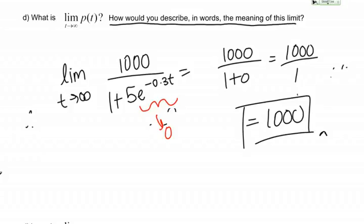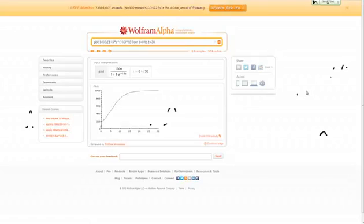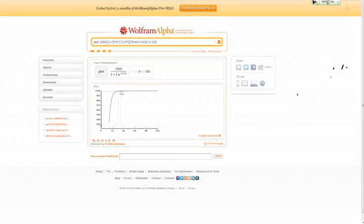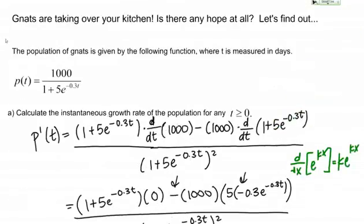What this is telling me is that at times far in the future, I expect the gnat population to basically get to 1,000 or very close to 1,000 and then just stay there. Let me show you a graph very quickly to confirm this with you. Here's a graph of the original population function. We see that the population is increasing and then it levels out. If I were to go to time equals 100, I would see that the population is still hovering around 1,000 there, approaching 1,000. What that tells us about your kitchen is if you do not intervene, eventually you'll have 1,000 gnats. Hopefully this gives you a better understanding of how to approach word problems using derivatives.